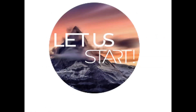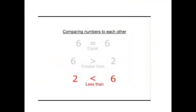We are going to start our lesson today — something very interesting: comparing numbers to each other. 6 equals 6. These two lines — this is called equal. This sign is called greater than. When the big number is here, we use greater than. This is less than. Equal, greater than, less than.